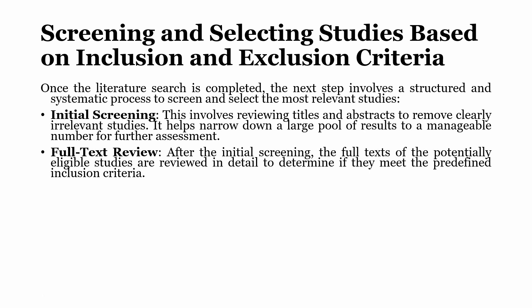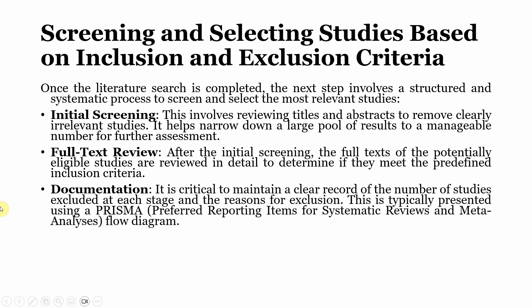Documentation is critical. You must maintain a clear record of the number of studies. As emphasized throughout this systematic literature review course, everything must be documented — whatever new search you do, whatever reading you do that results in inclusion or exclusion of something. You can record it in an Excel sheet, a table, or a Word document.